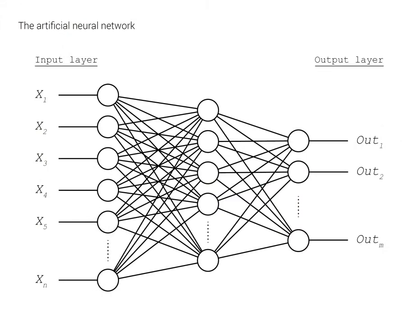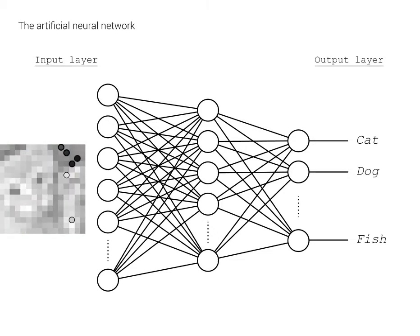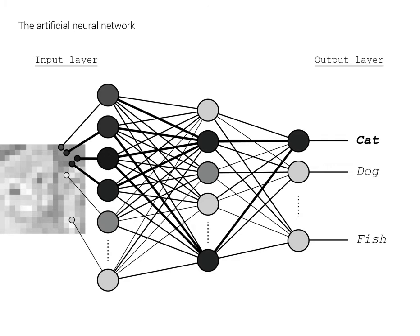Say we have a collection of photographs of animals and we want to teach an artificial neural network to identify what the animal is. The computer doesn't know anything about cats or dogs, but we can directly input the pixel data from those images straight into the network's first layer. That information gets passed down through subsequent layers based on how these connections are wired, eventually reaching the last layer where one neuron gets most activated — related to the cat category — and the computer says, I think this picture is a cat.